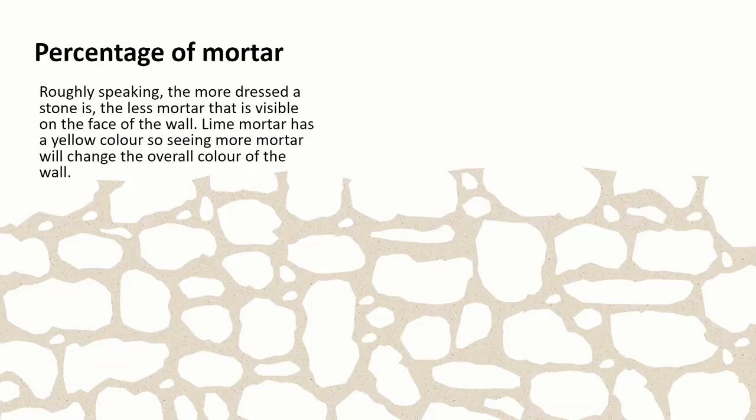An important thing to think about for all of those patterns of stonework is the percentage of mortar. The more dressed a stone is the less mortar that we see on the face of the wall and with historic buildings we tend to use lime mortar and lime has a yellowy honey colour so if we see more of that mortar then it's going to change the overall appearance of the wall.